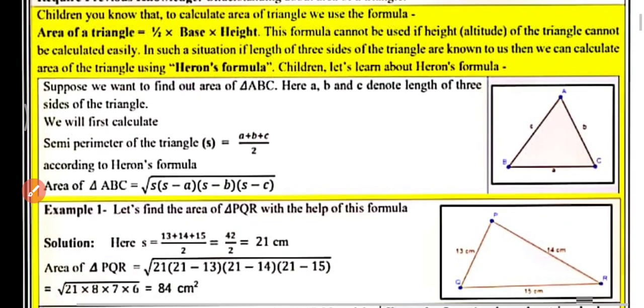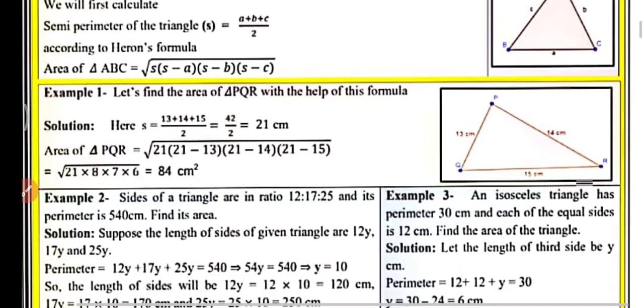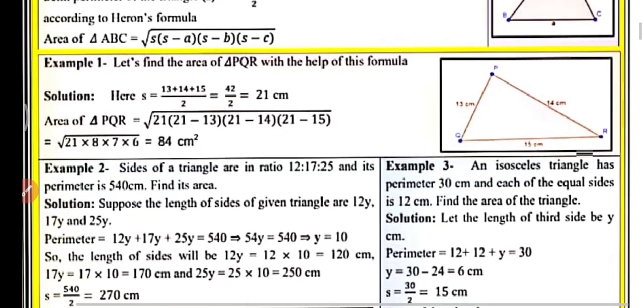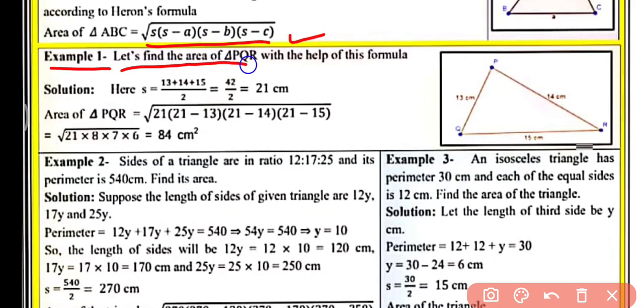Now, the area of triangle ABC according to Heron's Formula is: area equals under the root of S into (S minus a) into (S minus b) into (S minus c). Let's see example number one and find the area of triangle PQR with the help of this formula.